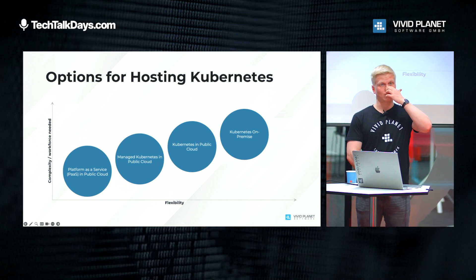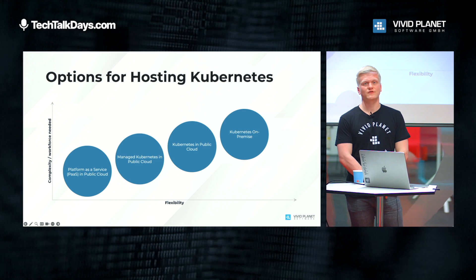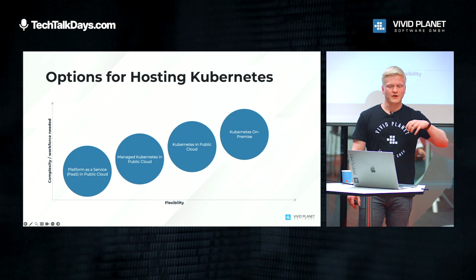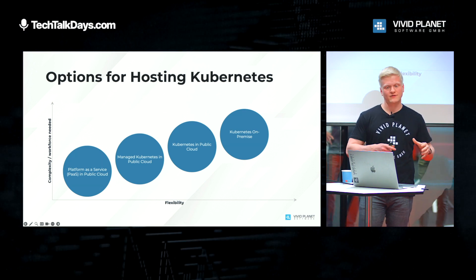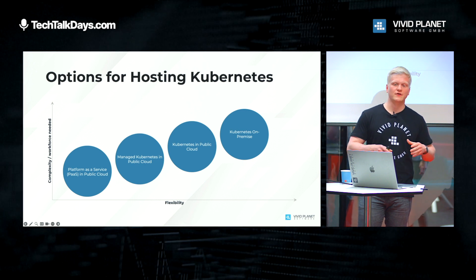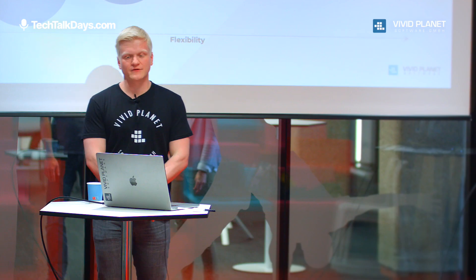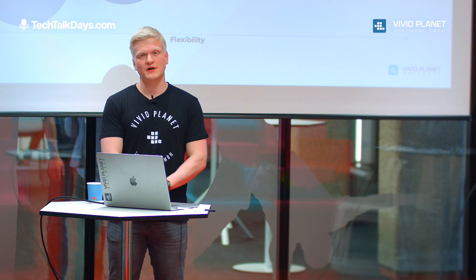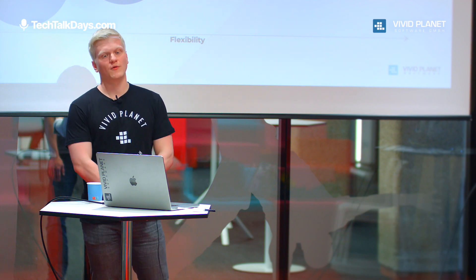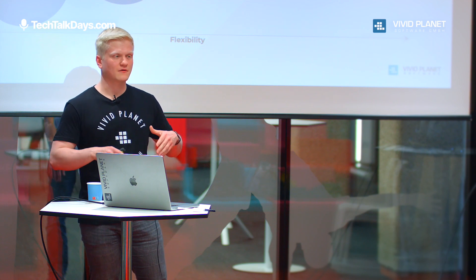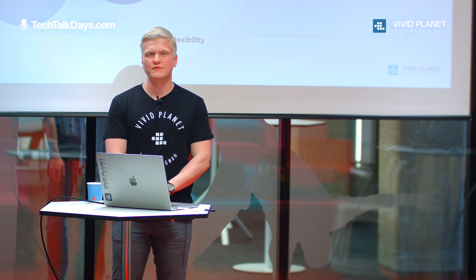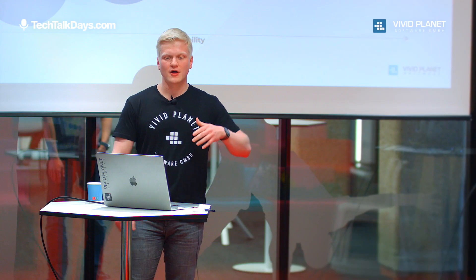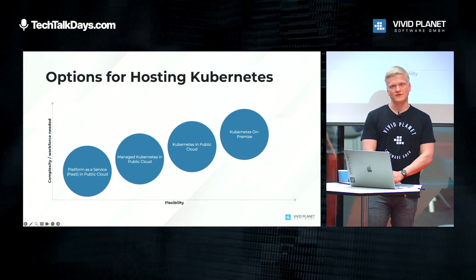The next option is to go for a managed Kubernetes service in the public cloud, where the public cloud provider handles the deployment of Kubernetes and some of the complexity for you. You still need to figure out routing or load balancing and set up multi-tenancy or security. And if you want even more support, you can use a platform-as-a-service tool like Red Hat OpenShift, which handles routing for you but gives you the least flexibility.